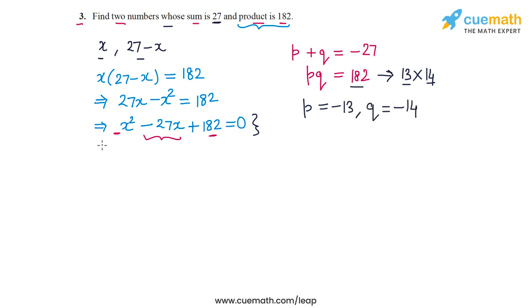So let's split the middle term using these numbers. So we get x square minus 13x minus 14x plus 182 equal to 0. And now we can factorize this quadratic equation easily.